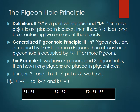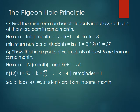In the formula: n is the number of pigeonholes, k plus 1 tells us how many pigeons must be in at least one box. This is the complete theory of the Pigeonhole Principle. Now let's solve some questions.